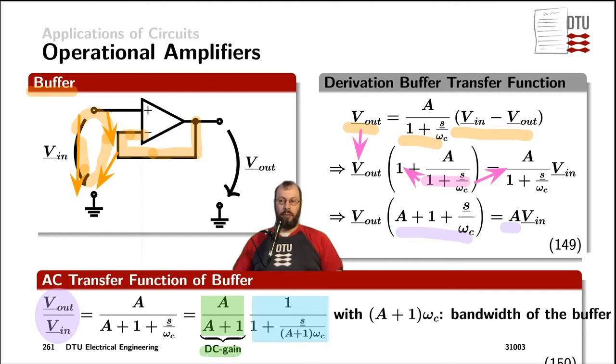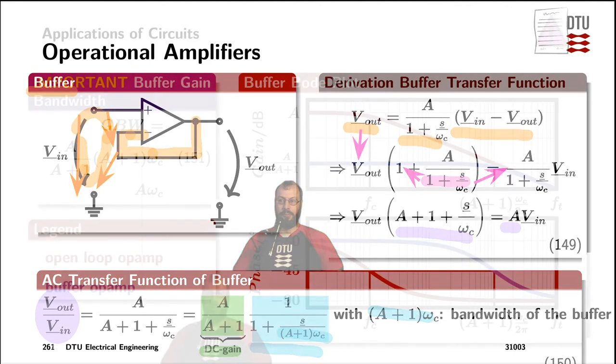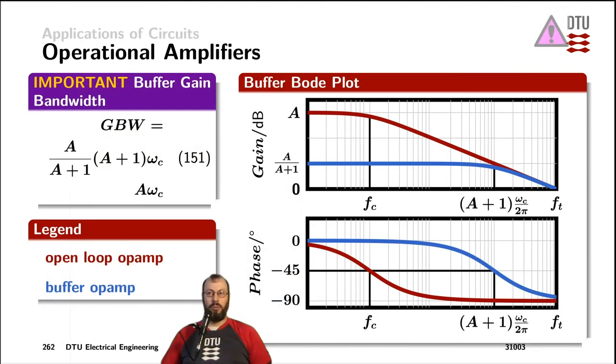Which leaves us with the first-order low-pass equation for the AC behavior of the buffer amplifier. The gain of the amplifier is the same as the DC gain here in front of the fraction, which describes the low-pass behavior, and the bandwidth is in the new pole, which now is A plus 1 multiplied with omega C. From those two parameters, we can finally calculate the gain bandwidth product for our buffer amplifier, where we have the DC gain to be A over A plus 1, and the bandwidth was A plus 1 multiplied by omega C. And we can see that the gain bandwidth product stays the exact same as we had for the open-loop operation.